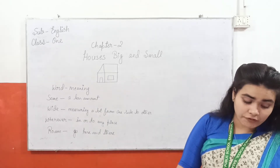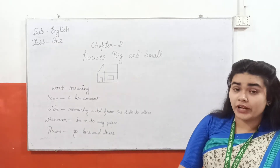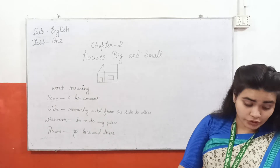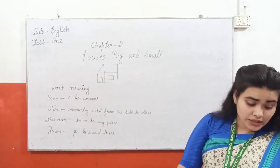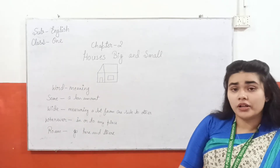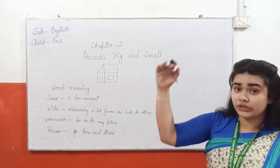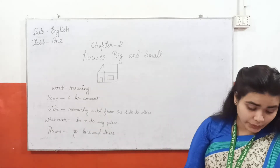Some houses are wide — kuch houses jo hota hai chore hota hai. Some houses are tall — tall, lambhe hota hai.